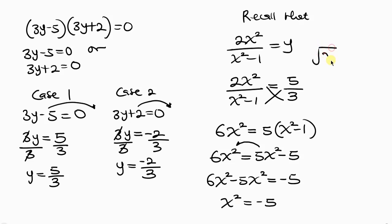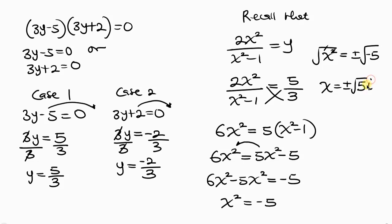Taking the square root of both sides: x = ±√(-5). Since the square root of a negative number introduces i, we get x = ±√5·i.